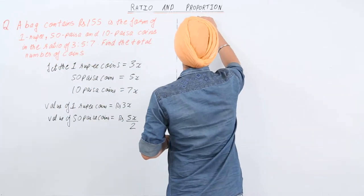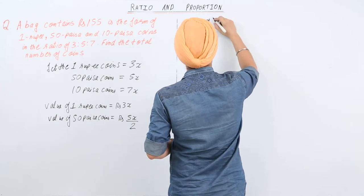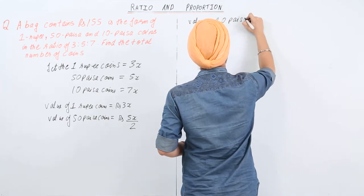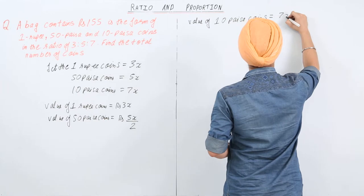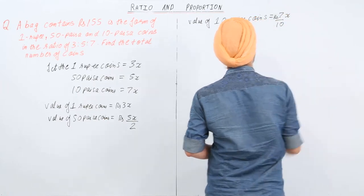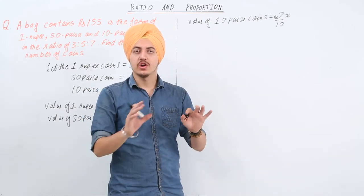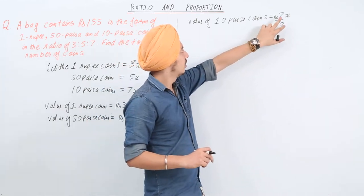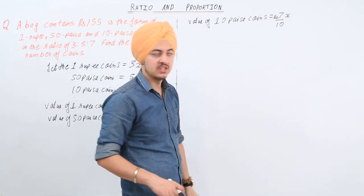The value of 10 paisa coins is equal to 7x divided by 10 rupees. Why? Because 10 ten-paisa coins make 1 rupee, or the value of 1 ten-paisa coin is equal to 1/10th of a rupee. So 7x ten-paisa coins make 7x/10 rupees.